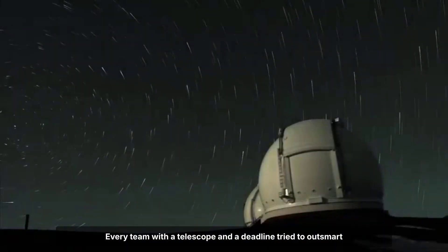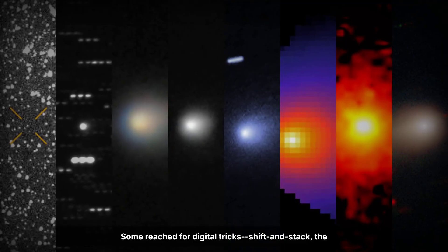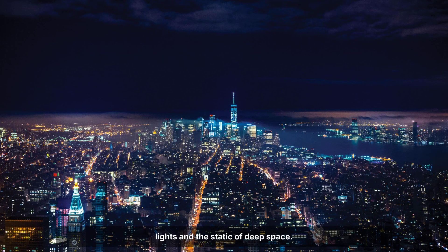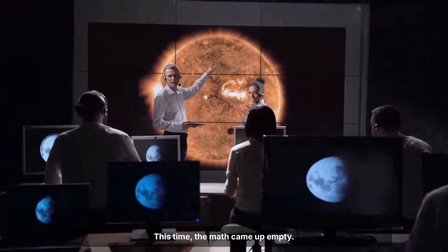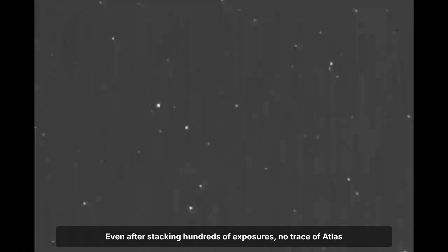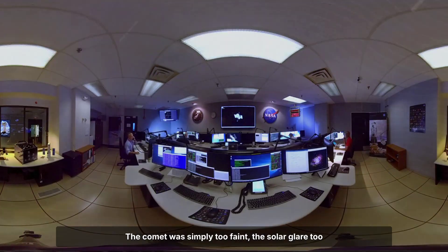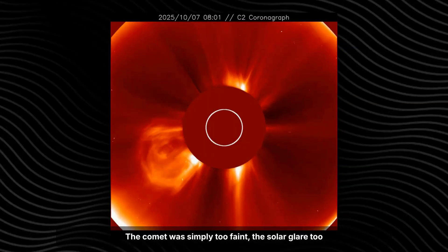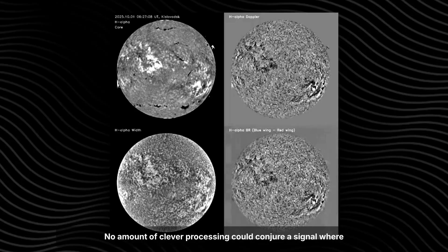Every team with a telescope and a deadline tried to outsmart the blackout. Some reached for digital tricks, shift and stack, the technique that's rescued dim objects from the glare of city lights and the static of deep space. This time, the math came up empty. The background noise from the sun drowned out every possible frame. Even after stacking hundreds of exposures, no trace of Atlas surfaced above the digital static. The comet was simply too faint. The solar glare too overwhelming.